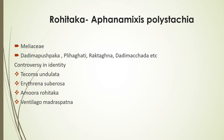In North India, it is considered to be Tacoma andulata. Whereas by research of pharmacognosy in Indian medicinal plants, it is identified as Amura Rohidaga or Afanomyxus polystachia, which is the accepted identity in South India. It is also considered to be Erythrina's Yubarosa, or Vendilago Madras Patna in different parts of India.